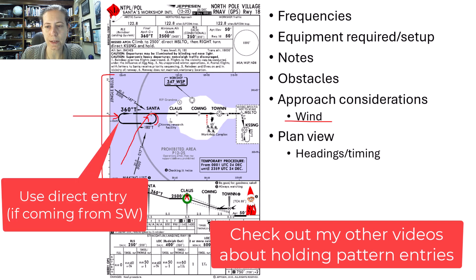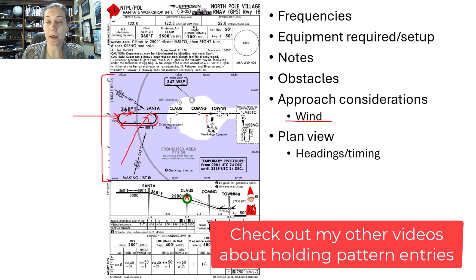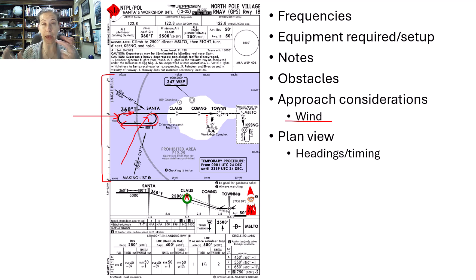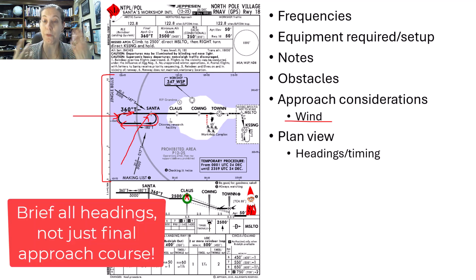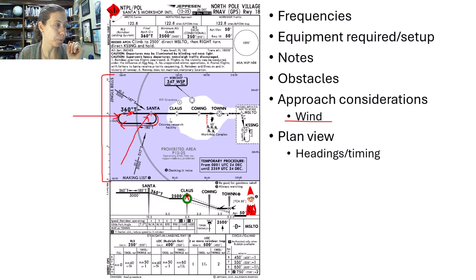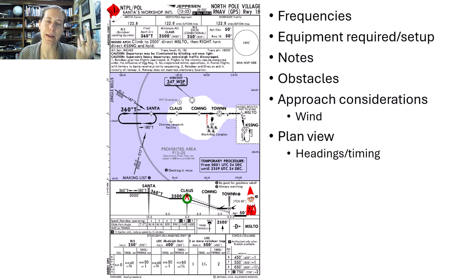Once I hit the Santa fix, I'm going to make a turn and go outbound for one minute, then turn back inbound on the selected course. When I say brief the headings, I mean everything — approach heading, any holding pattern or procedure turn I need to do. If I'm getting radar vectors, I can brief what I might expect. So briefing headings covers the full picture of how I expect to navigate the approach.